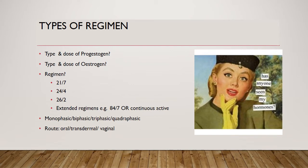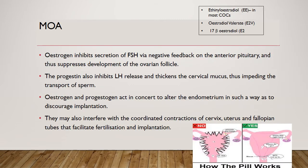The route of oral contraceptives can differ — oral, transdermal as a patch, or as a vaginal ring. Estrogen inhibits the secretion of FSH via negative feedback on the anterior pituitary, suppressing development of the ovarian follicle. Progesterone also inhibits LH release and thickens the cervical mucus, impeding sperm transport. They act in concert to alter the endometrium to discourage implantation and may interfere with coordinated contractions of the cervix, uterus, and fallopian tube. Ethinyl estradiol is used in most combined oral contraceptive pills.